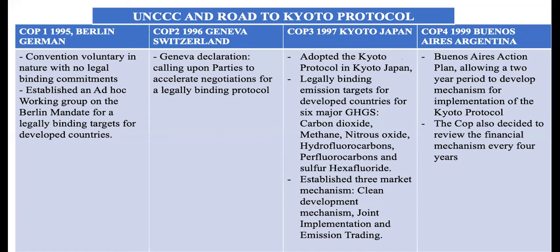Then, in the next COP — COP3 in 1997, which took place in Kyoto, Japan — the conference adopted the Kyoto Protocol. The Kyoto Protocol set legally binding emission targets for developed countries on six major gases: carbon dioxide, methane, nitrous oxide, hydrofluorocarbons, perfluorocarbons, and sulfur hexafluoride.